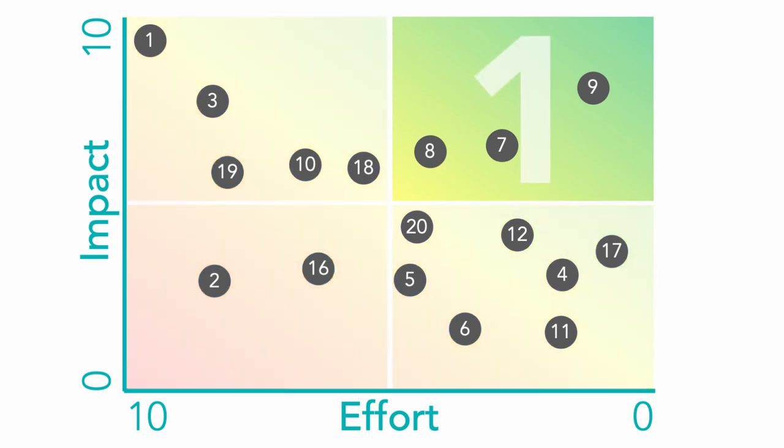Initiatives that are in quadrant one, low effort and high impact are the low hanging fruit. We definitely want to implement these as they give us the biggest bang for our buck. We don't usually have very many of these and if we did, we probably wouldn't need to conduct this exercise.